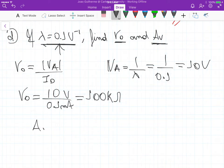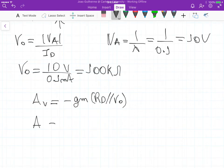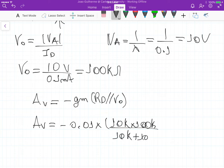Now for the gain considering the channel modulation effect, if we are inserting this Rout in parallel with RD, we get that the voltage gain is minus gm times RD in parallel with Rout. This gives us AV equals minus 0.01 times 10k times 100k divided by 10k plus 100k.